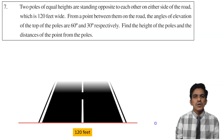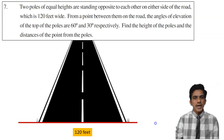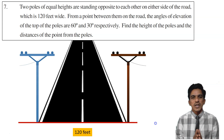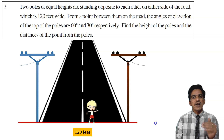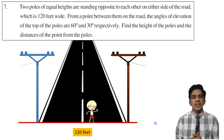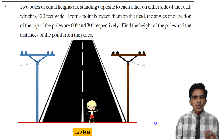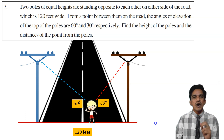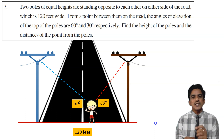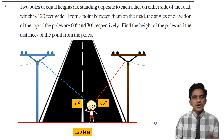In this problem, there are two poles standing on either side of a road which is 120 feet wide. Here we have a road like a national highway. There are two poles of equal height. The observer is standing on the road between these two. When this observer observed the tops of these two poles, he found that the angles of elevation are 60 degrees and 30 degrees. The angles of elevation are different because the observer is not equidistant from both poles.